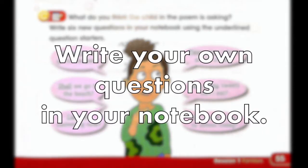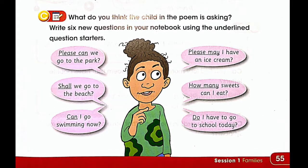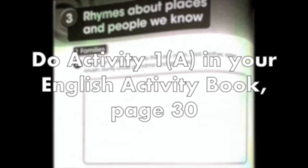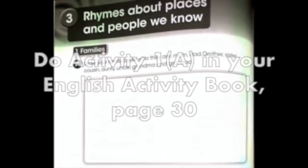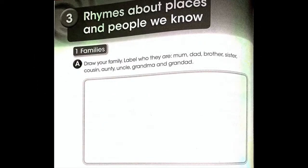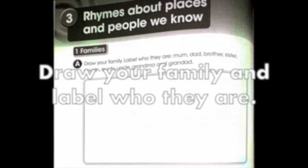Write six questions of your own in your English notebook. Then do activity 1a on page 30 of your English activity book. You have to draw the members of your family and label who they are.